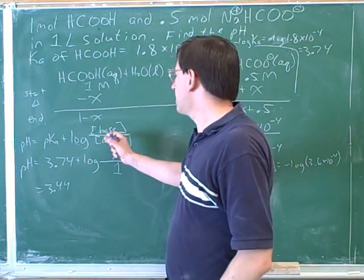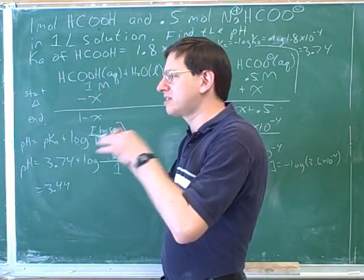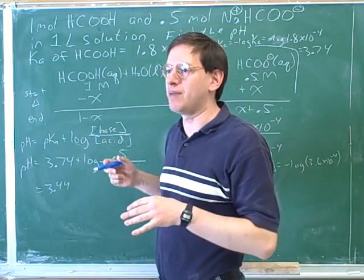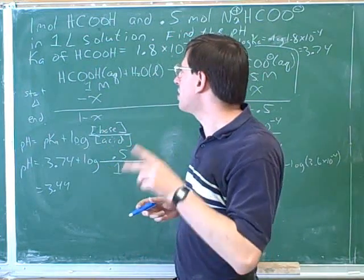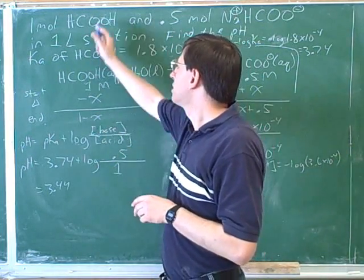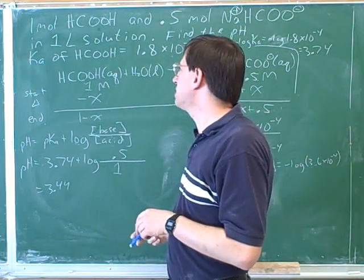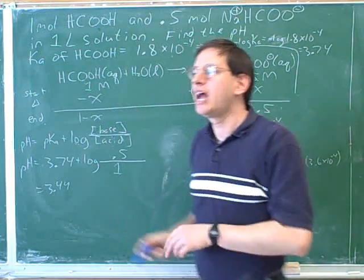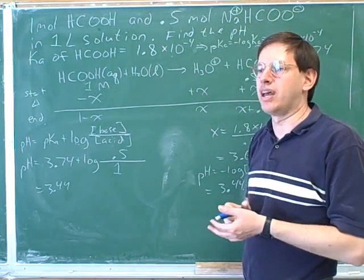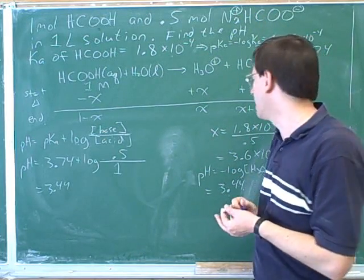So when do you use the Henderson-Hasselbalch equation? When we're in this last case above the thick line on the handout. That's the only time that it applies. You have to be starting with both. You have to start with a positive amount of the weak acid and a positive amount of its conjugate.